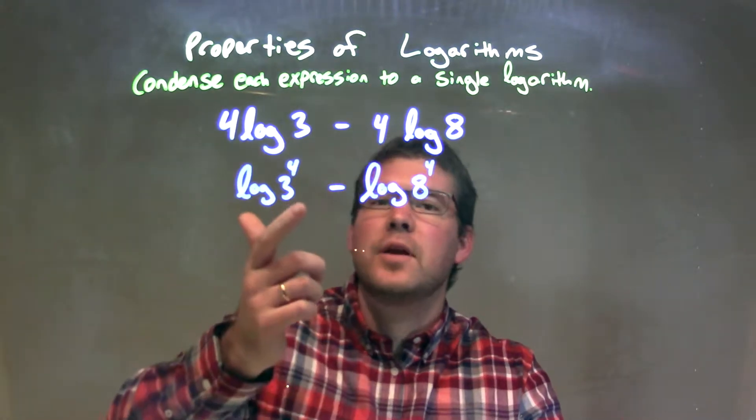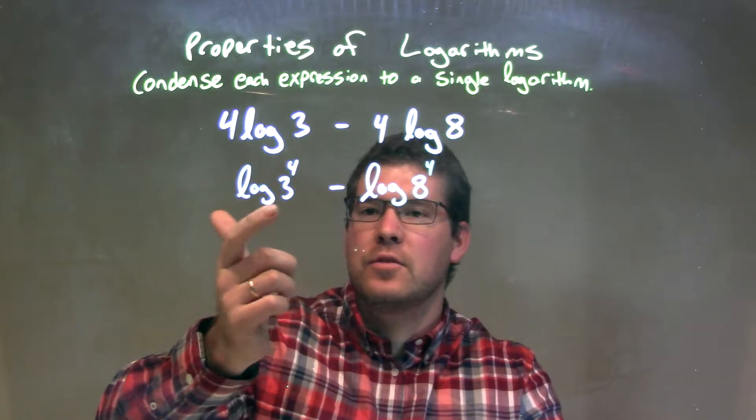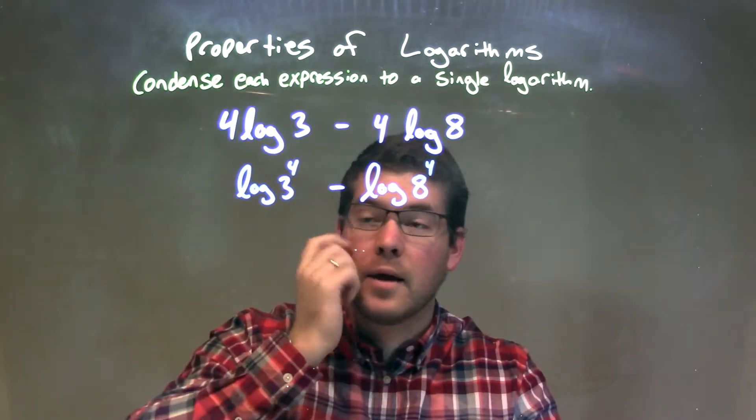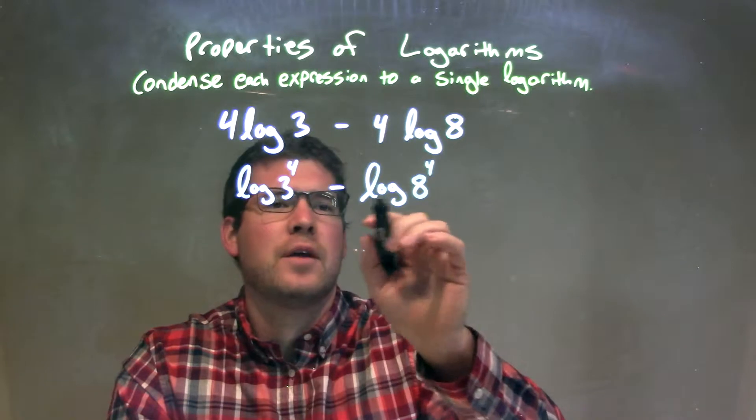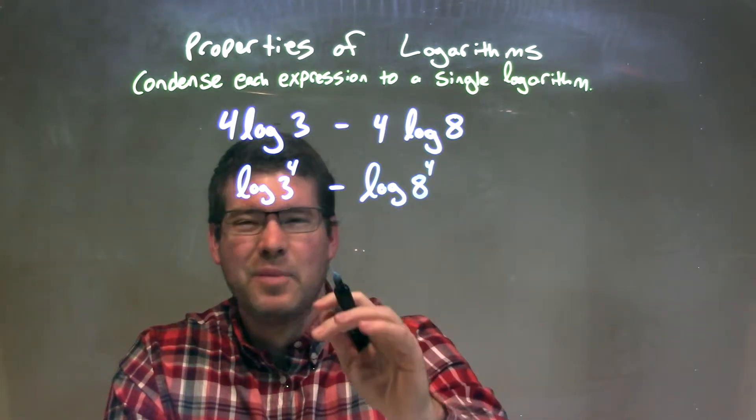Well, they're separated now by subtraction, these two logs. Okay, the logs have the same base, so we can combine them. We have log 3^4 minus log 8^4. We combine that and it becomes a division.